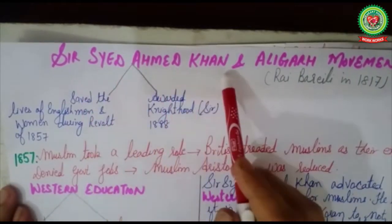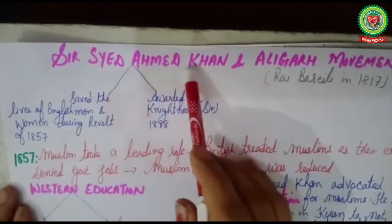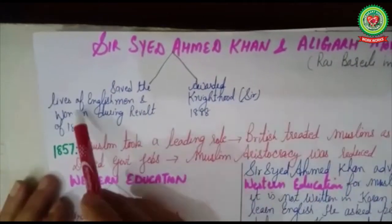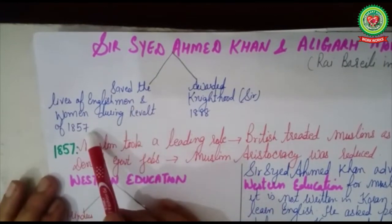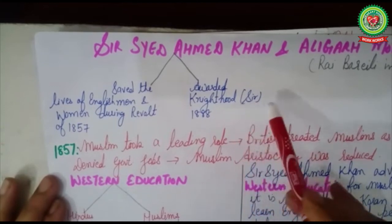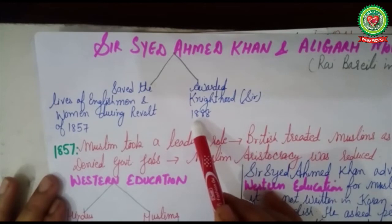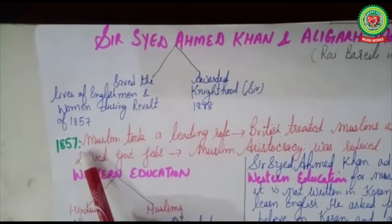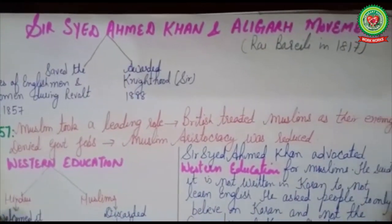Now in today's session we will discuss one more religious movement: a Muslim movement started by Sir Syed Ahmad Khan and the Aligarh movement. Sir Syed Ahmad Khan was born at Rai Bareilly in 1817. He saved the lives of many Englishmen and Englishwomen during the Revolt of 1857, and was awarded a knighthood — given the title of 'Sir' in 1888 by the British government — for his loyalty.